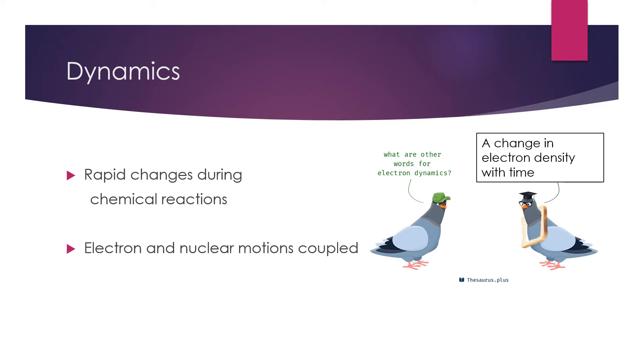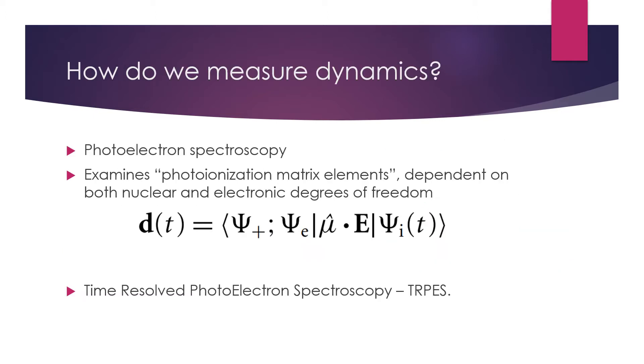The Born-Oppenheimer approximation breaks down due to the coupling of nuclear and electronic motions, so it would be difficult to model theoretically. So, instead of modeling the system theoretically, why don't we actually measure it?